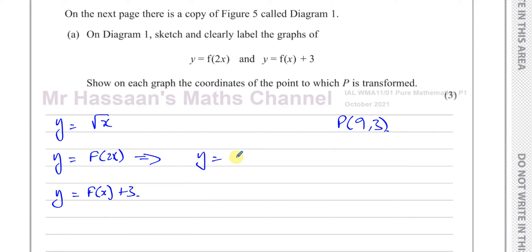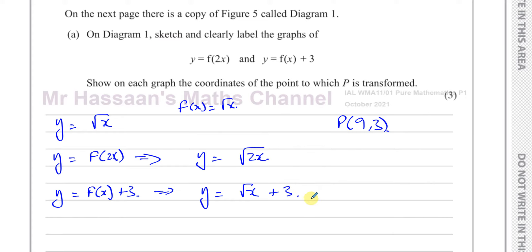So f(2x) gives y equals the square root of 2x. This affects only the x coordinates — the y coordinates remain unchanged. Since we are multiplying x inside the function by 2, we multiply the x coordinates by the reciprocal of 2, which is a half. So the new point P for this first graph is going to be x = 4.5 (half of 9) and y = 3 unchanged.